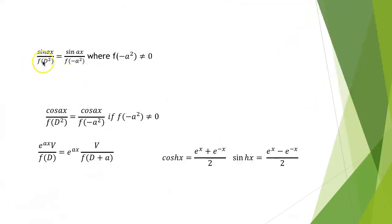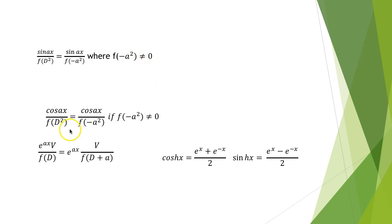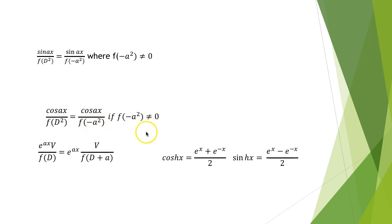For trigonometric functions: sin(ax) / f(D²) becomes sin(ax) / f(-a²), where f(-a²) ≠ 0. Similarly, cos(ax) / f(D²) becomes cos(ax) / f(-a²), provided f(-a²) ≠ 0.